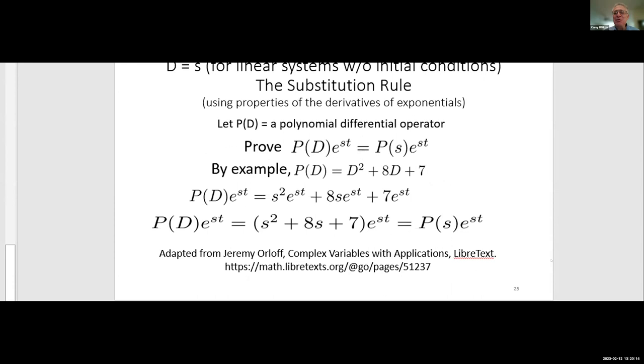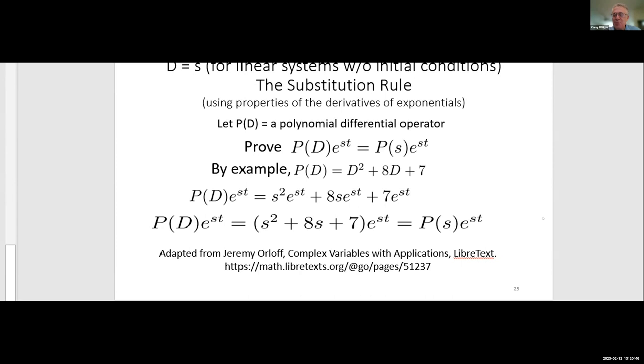That substitution from D to S, one often sees in some control books where they'll say, well, under special conditions, if it's a linear system without initial conditions, you can replace, in the restricted sense, D with S. But they really don't often explain or justify them. A recent book on complex variables had a nice little proof by example using polynomial differential operators. I'm not going to go into it, but it'll be in the slides there to justify that.